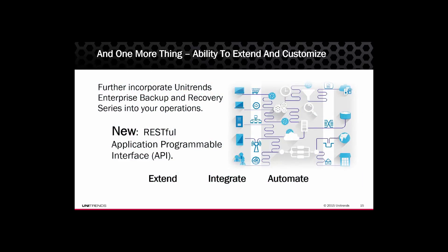One more important capability now available in Release 9.0: Unitrends has released a new powerful RESTful API that allows partners and customers to further incorporate Unitrends backup and recovery functionality into their operations. With the new API, partners can create new report views, integrate backups seamlessly into larger projects, or incorporate our capabilities into their own UIs — all using their favorite scripting language and this easy-to-use RESTful API.